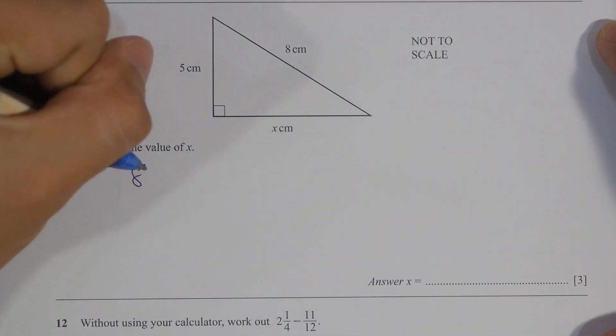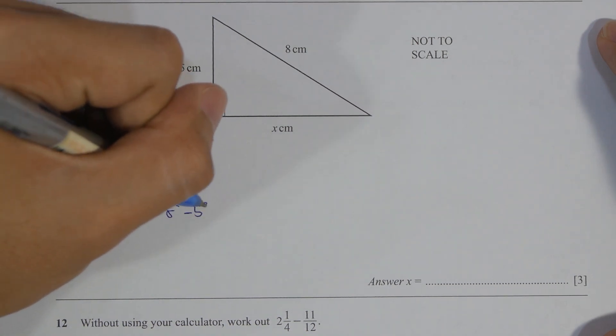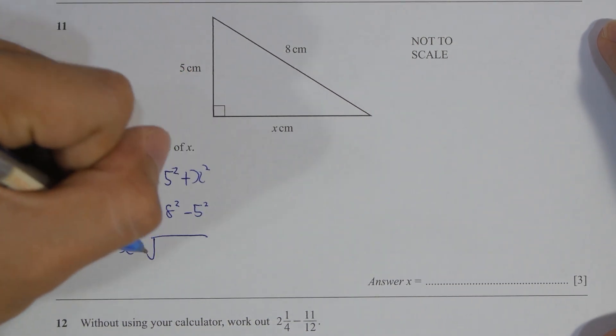Question 11, pretty straightforward. This one is Pythagorean theorem again. Simply run the calculation and you get the value as 6.24.